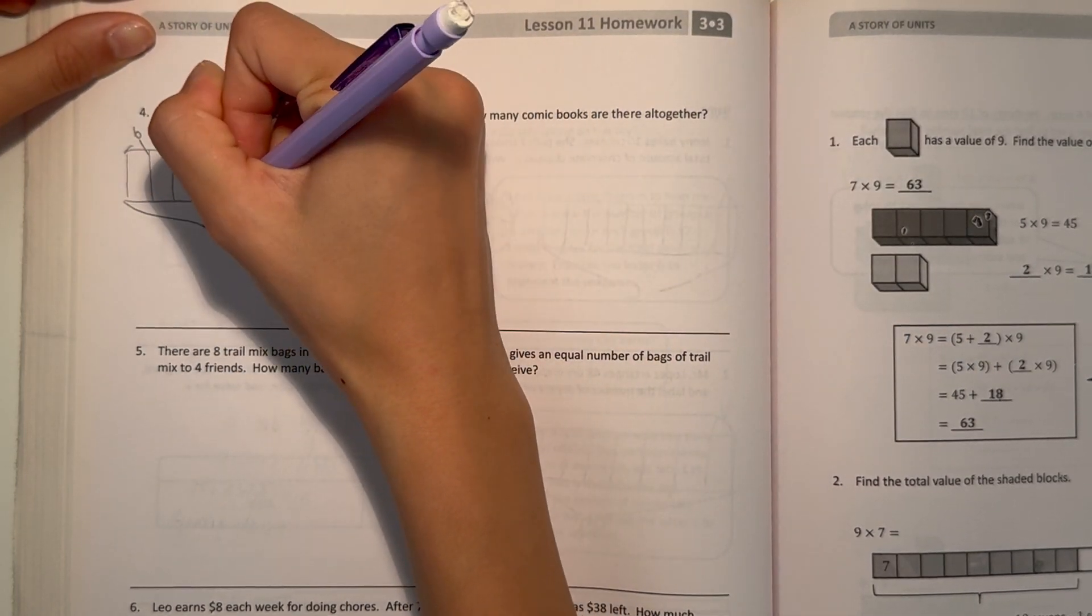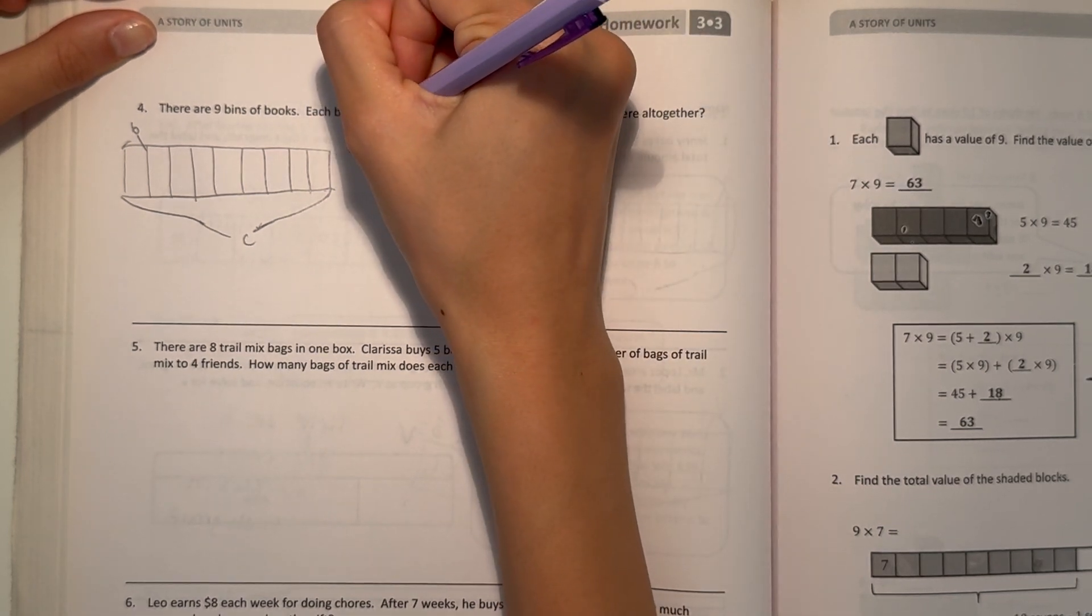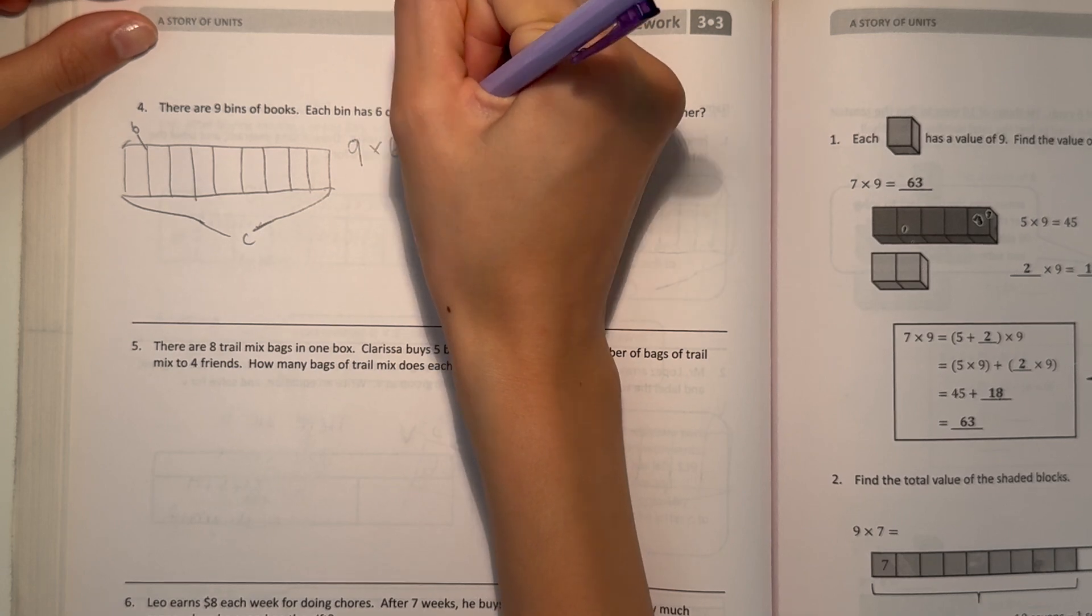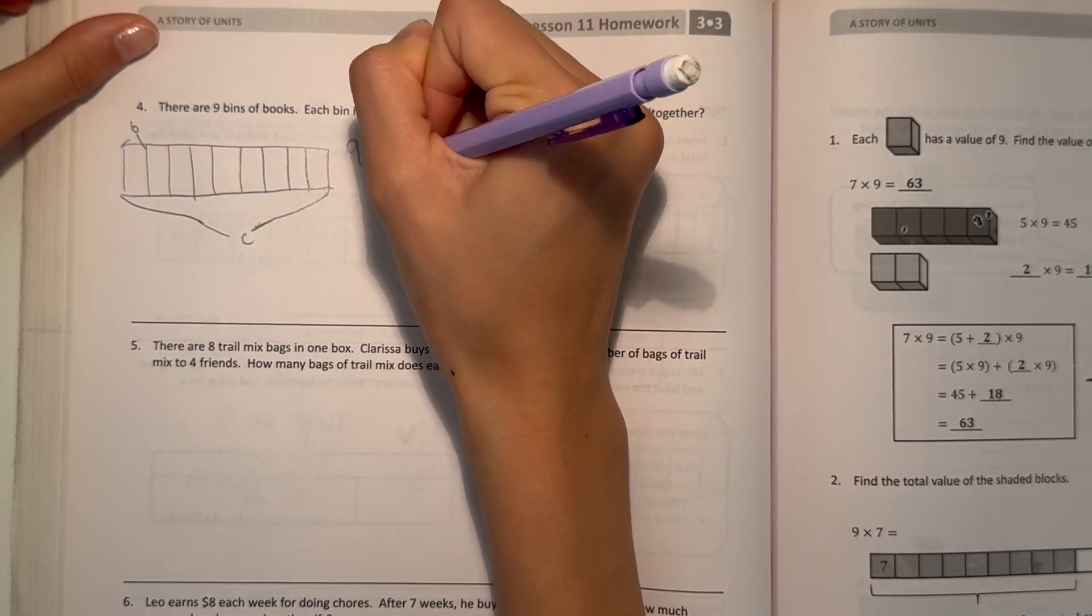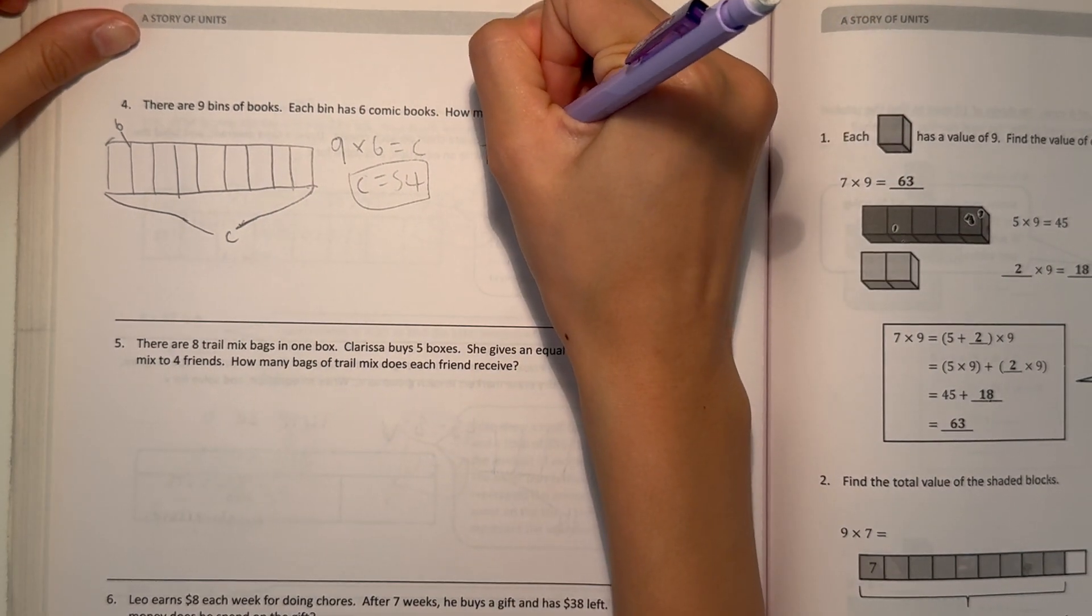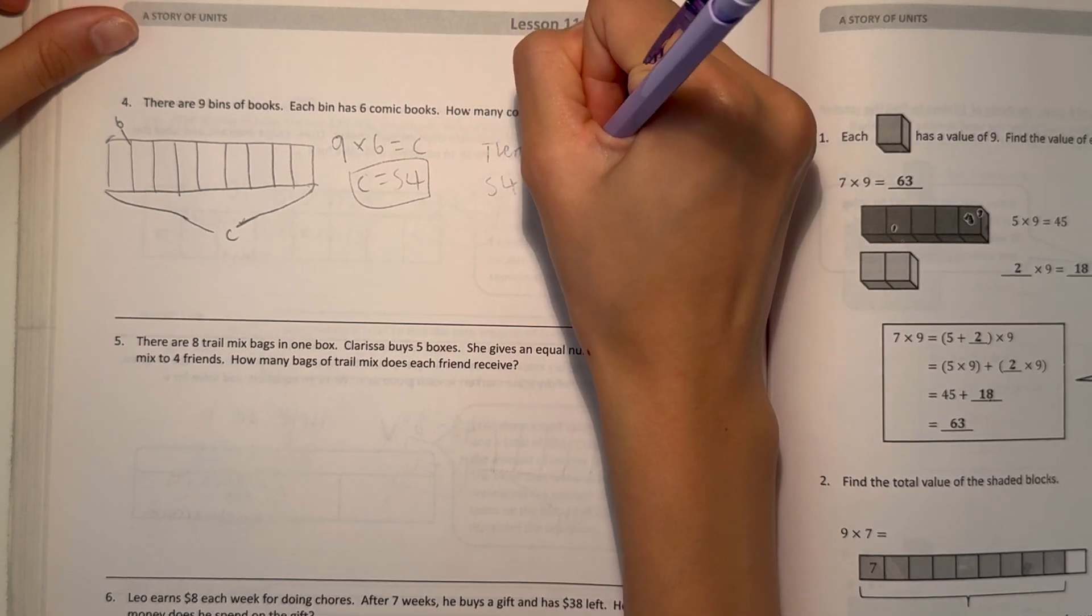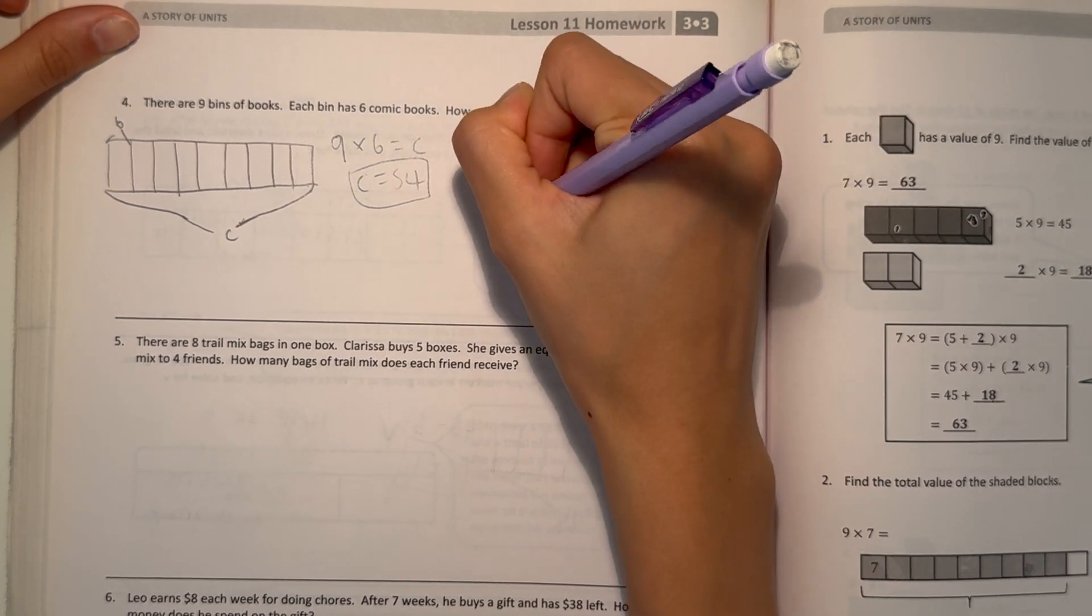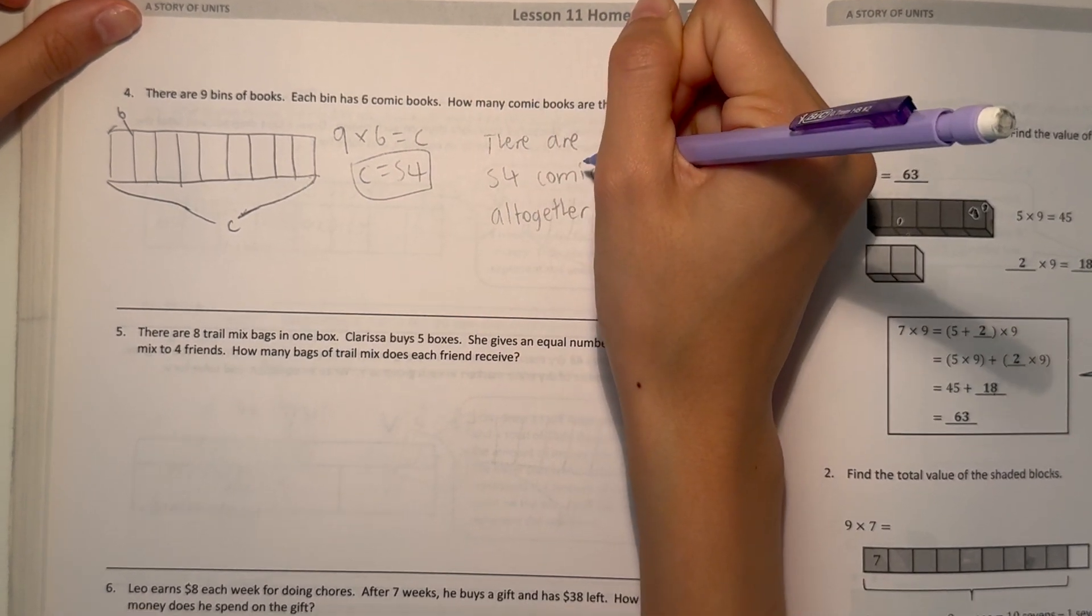We can do C for comic books. What we do is 9 bins times 6 equals C. So then C equals 54, which means there are 54 comic books all together.